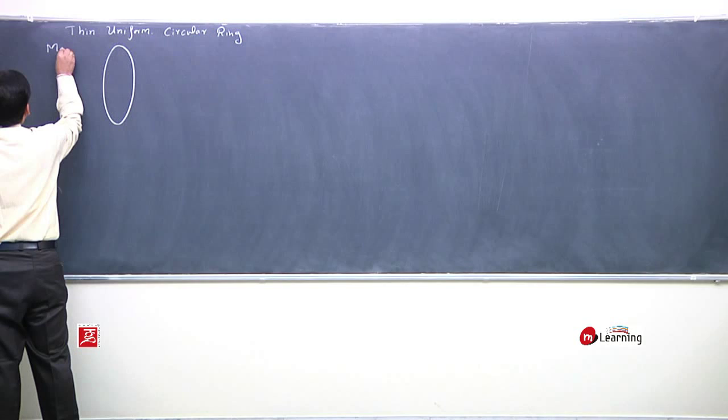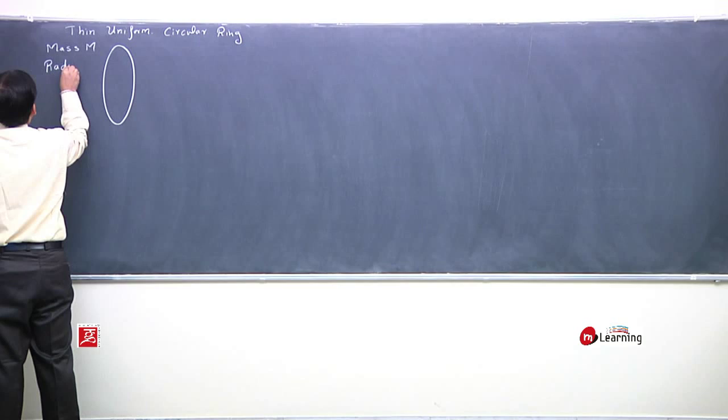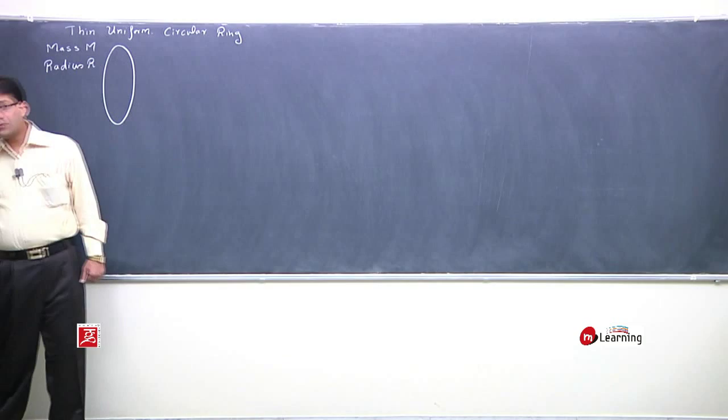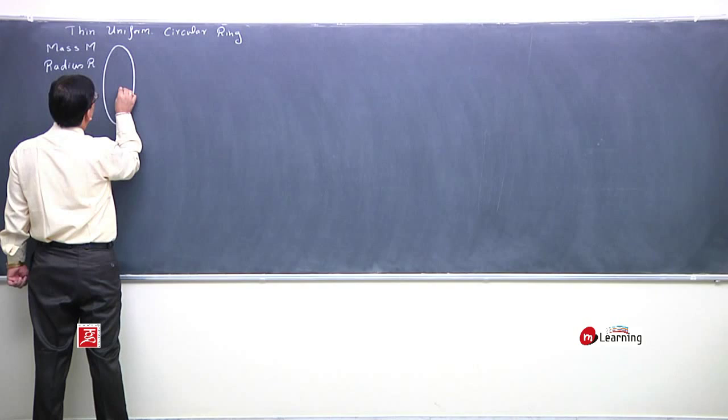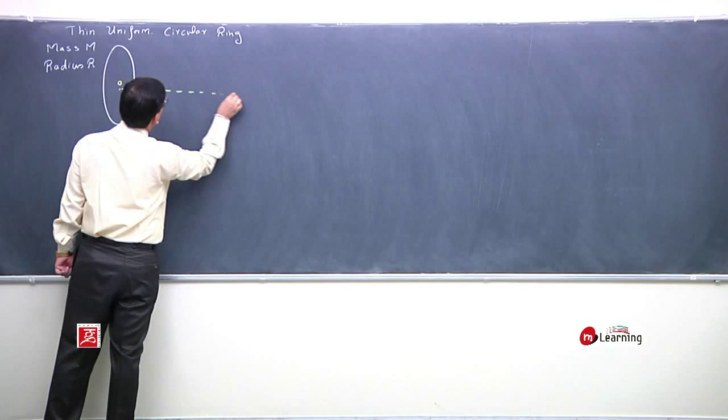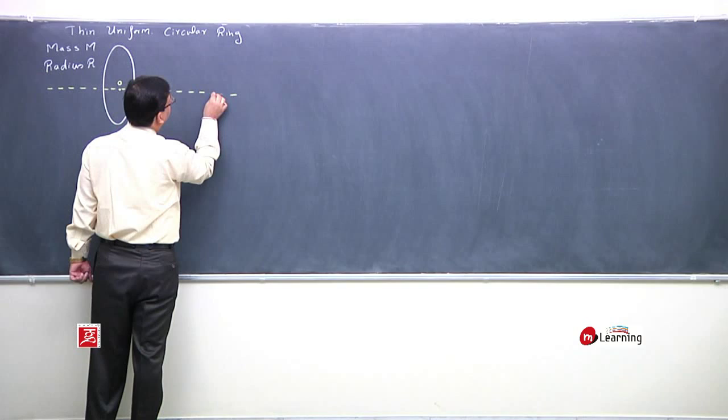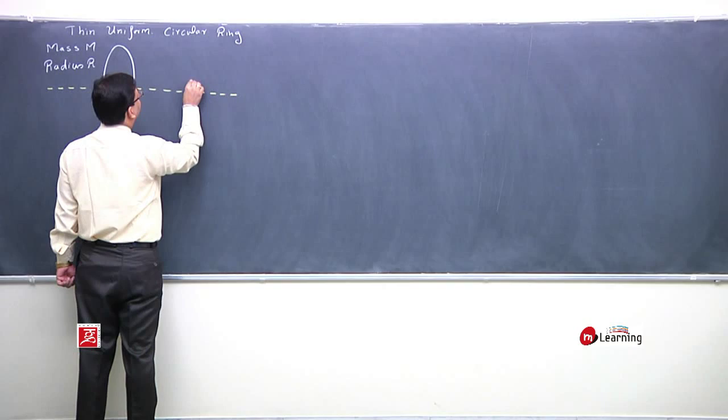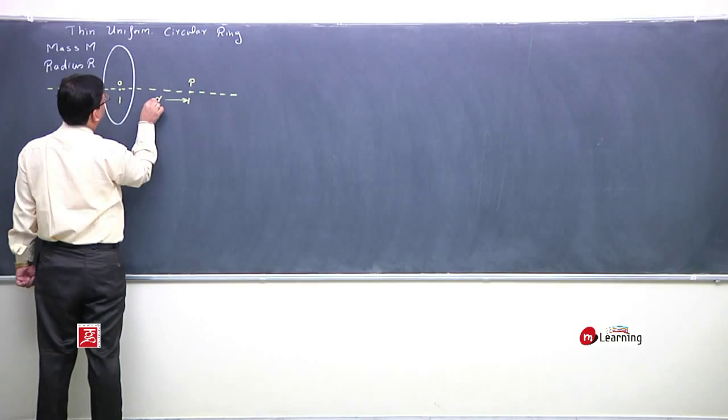Its mass is m and its radius is R. And this is the axis of ring. And this is the point.